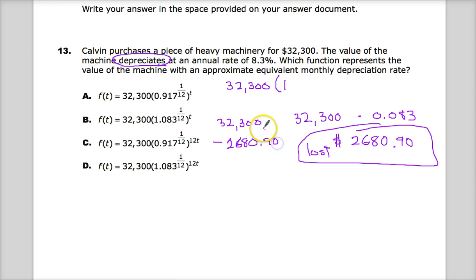So, say I have $32,300 minus $2,680.90. So, I need to figure out a way to, in a multiply sense, make that happen. So, if I just multiply this number by itself, I get this.